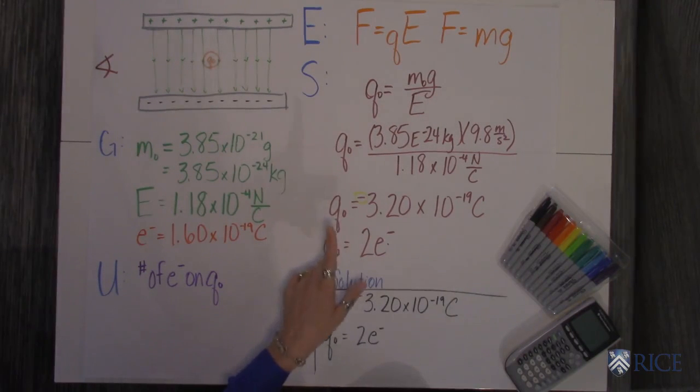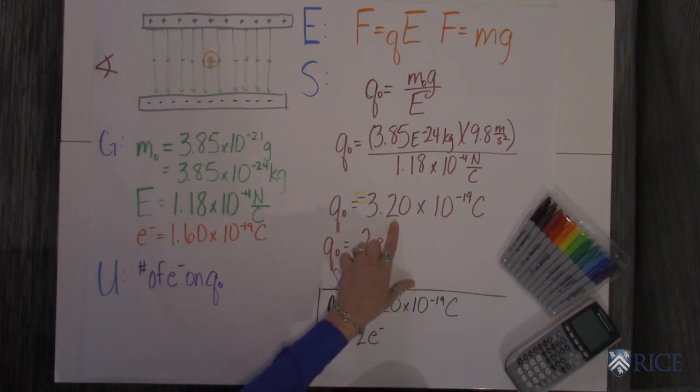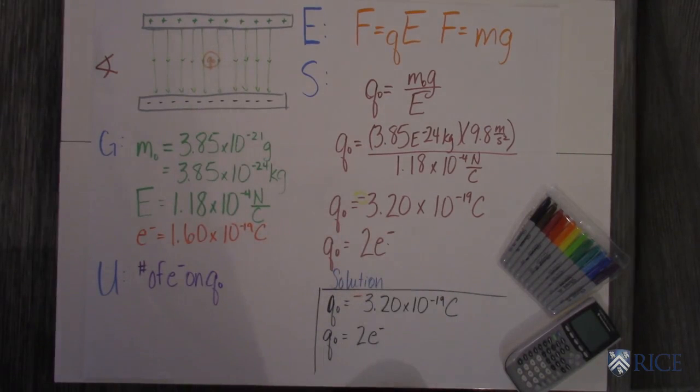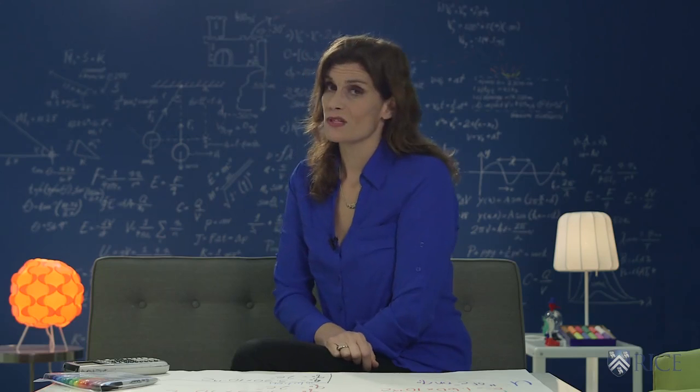you get that the charge of this particle is negative 3.2 times 10 to the negative 19th Coulombs. So you know it's two electrons, which is kind of cool.